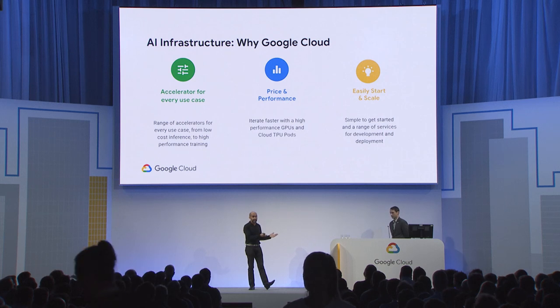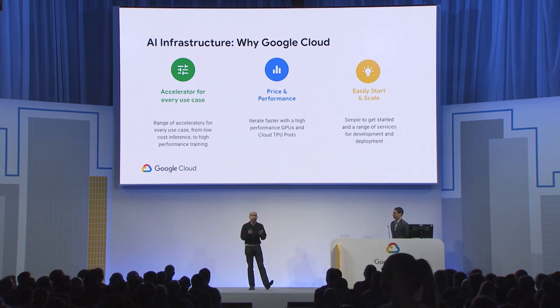Secondly, from a price and performance standpoint, you're able to iterate really fast using our high-performance GPUs as well as our Cloud TPU products. We also have a combination of tools offered through GCE, Google Compute Engine, as well as the AI Platform, that lets you leverage all of this infrastructure very easily. Products like contact center AI and document AI use AI infrastructure powered by Google Cloud, with customers using GPUs or TPUs depending on workload needs.